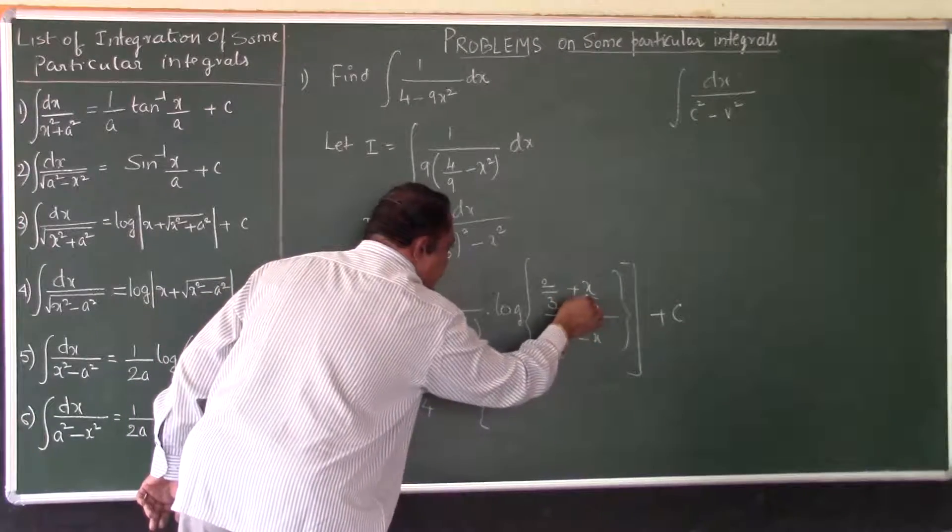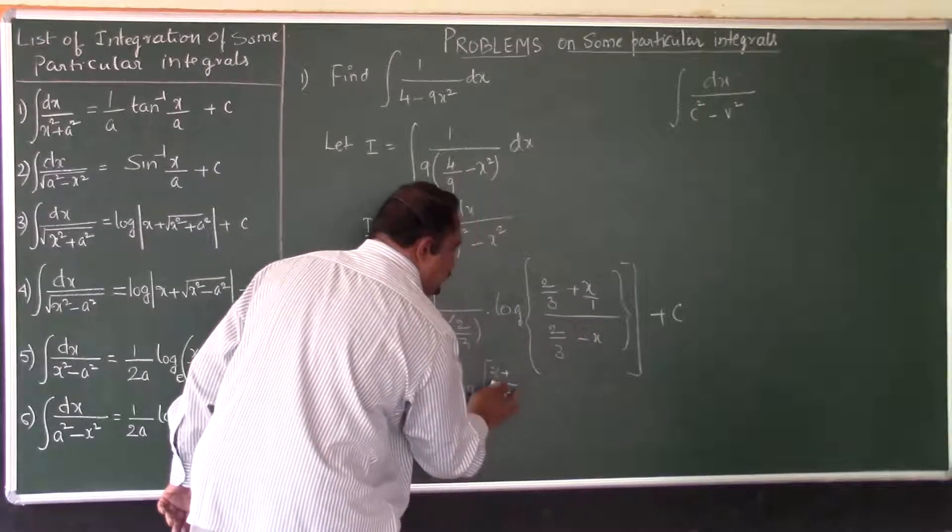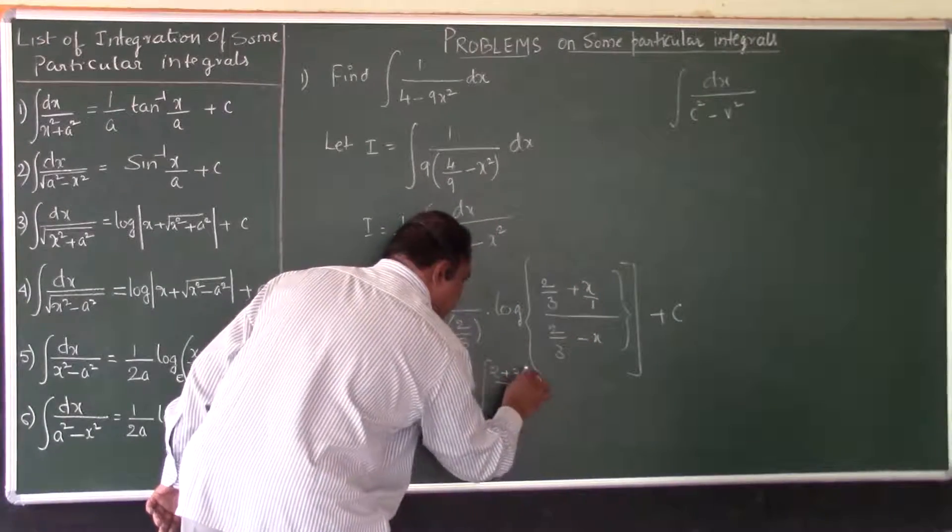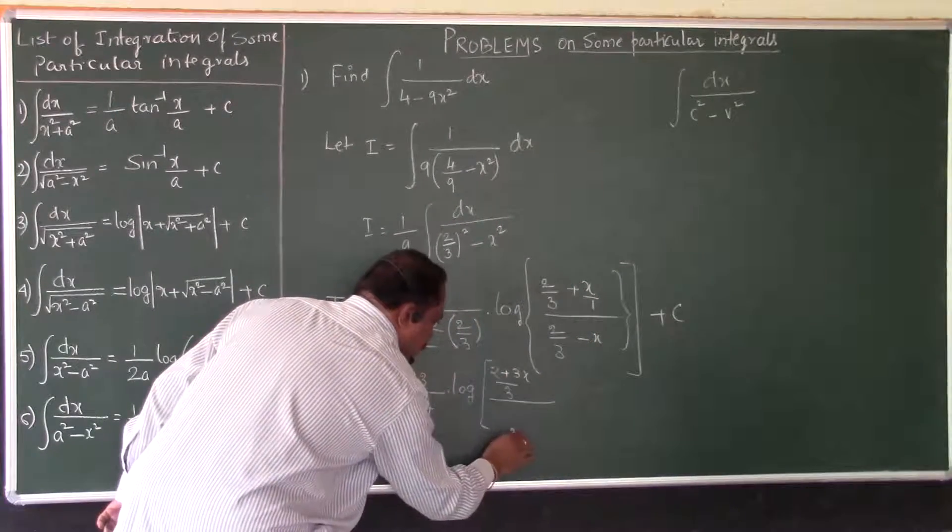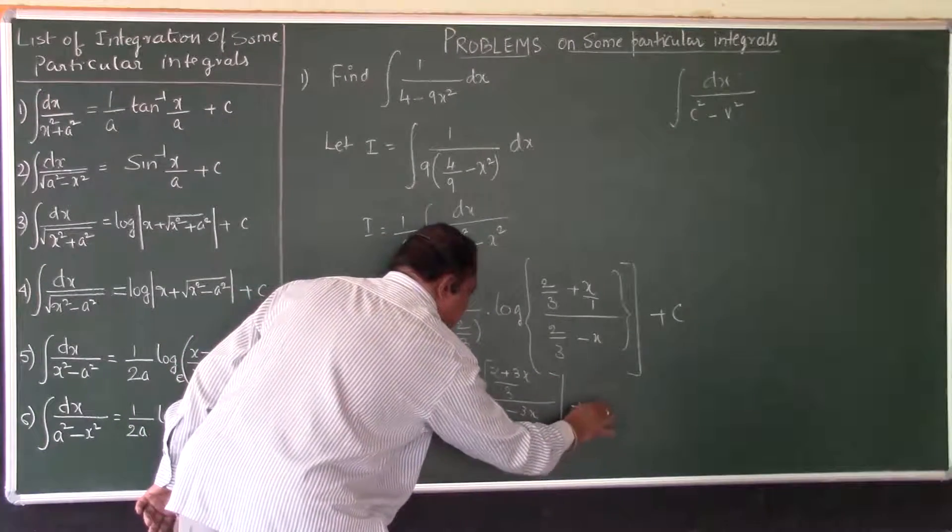Now there is 1 here. 3 divided by 1 is 3. 3 into x is 3x divided by, again in the denominator LCM is 3. So it is 2 minus 3x plus C.